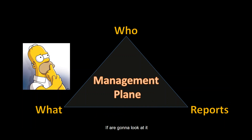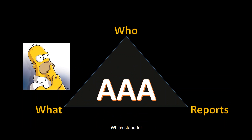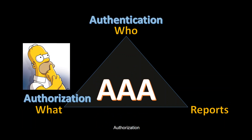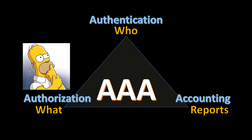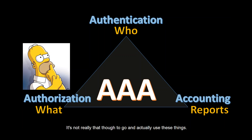This is quite related to what we call AAA, which stands for authentication, authorization, and accounting. Authentication identifies who is permitted to use network resources. Authorization defines what they are allowed to do. Accounting captures the actions performed while accessing the network. Don't worry — it's not that tough to actually use these things, so let's go to the lab.